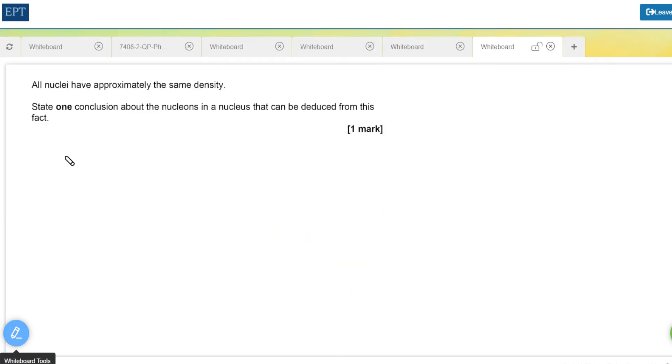Last part then. All nuclei have approximately the same density. What does this tell us about the nucleons in the nucleus? Well it tells you several things. Firstly the proton and the neutron both have about the same size or mass. But more interestingly it tells us that you can't really, well at least not easily, compress these nucleons.